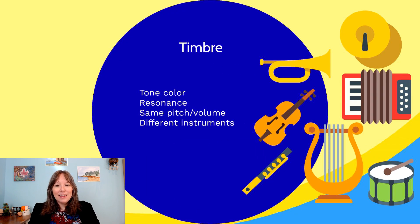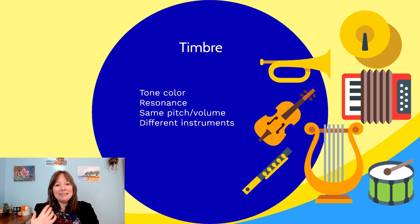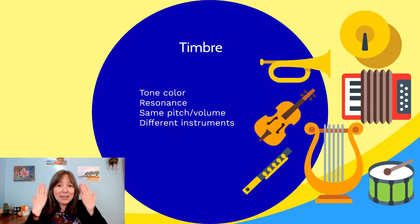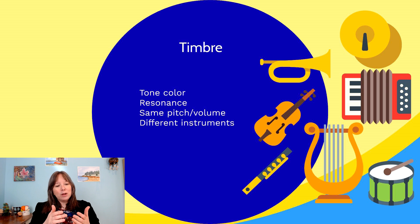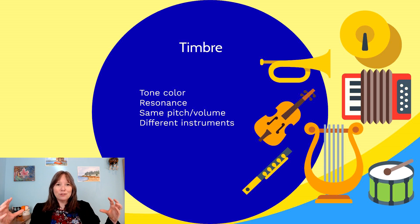Timbre can be described as the tonal color or resonance of a sound. Even if you're playing the same pitch and the same volume on different instruments, it sounds different. Playing middle C on a piano versus a violin versus a clarinet — they all sound distinct, and you can probably identify the instrument. That's timbre. A string instrument like a violin or a harp produces relatively pure sound waves from the vibrations of the strings, and a tuning fork would be among the purest tones.